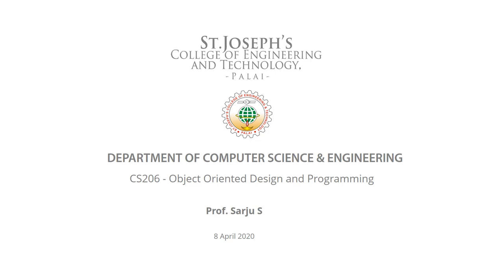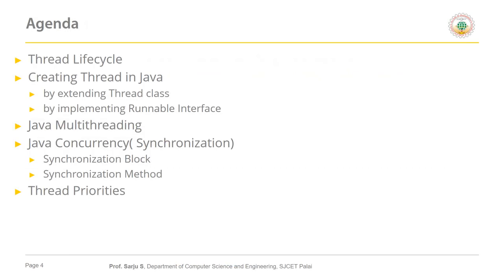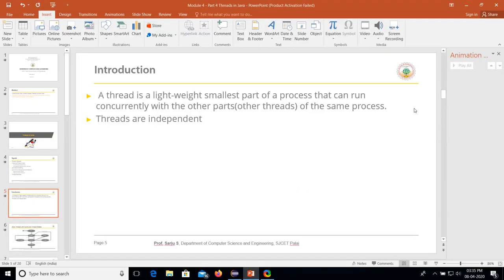Welcome to my fourth lecture of object-oriented design and programming. In this lecture we are going to discuss the second part of the fourth module, which is about threads. Today's agenda: what is a thread, the lifecycle of a thread, creating a thread in Java by extending the thread class and by implementing the runnable interface, Java multi-threading, Java synchronization using synchronization blocks and methods, and thread priorities.